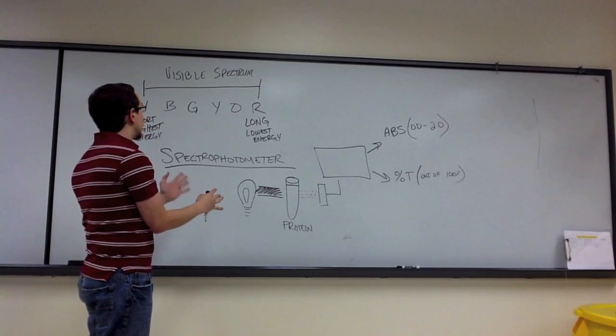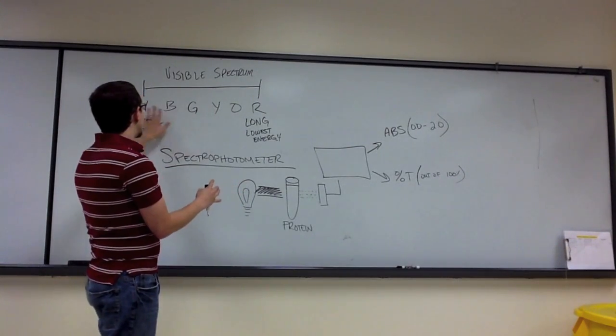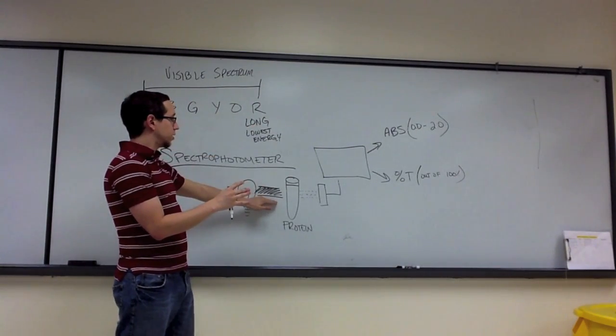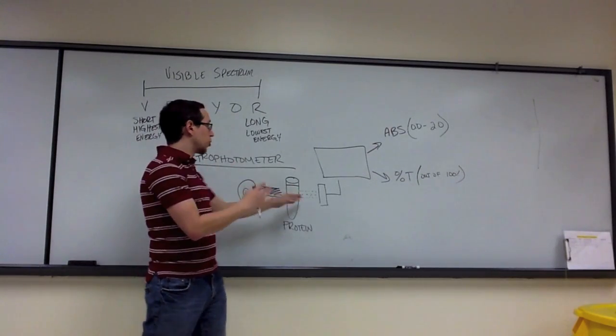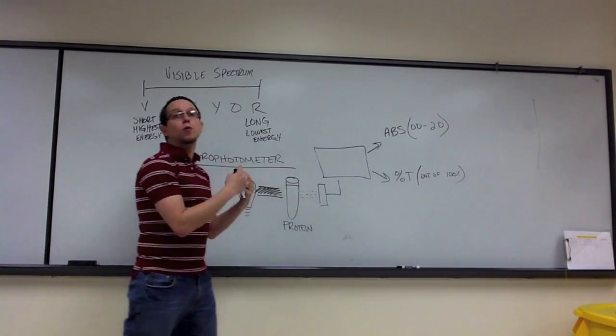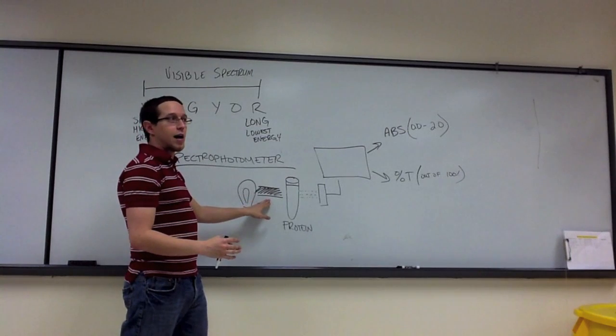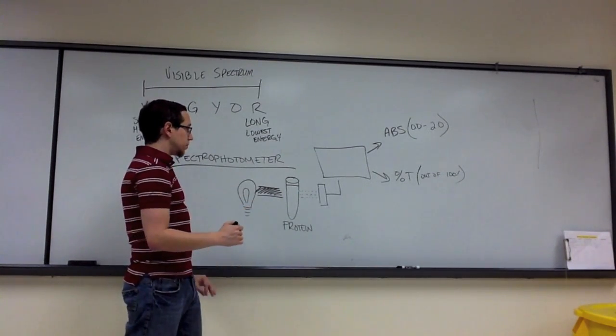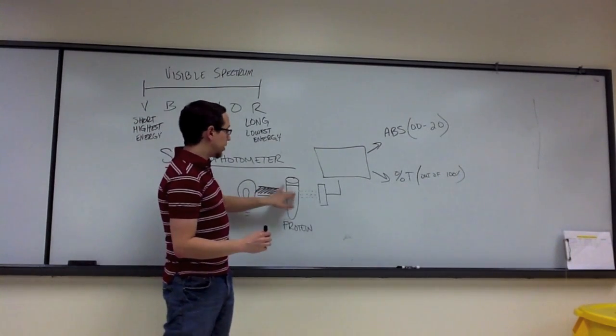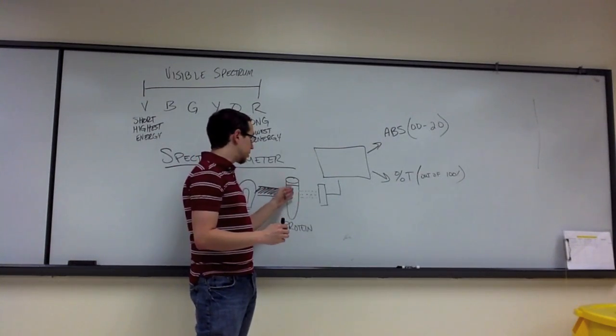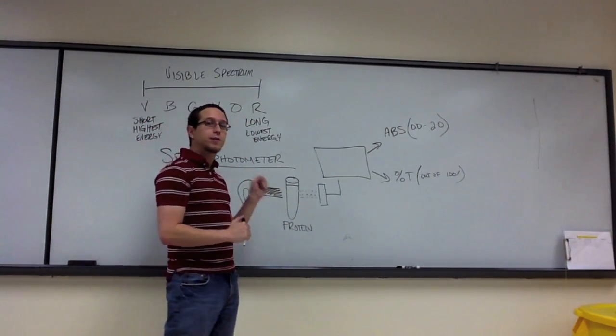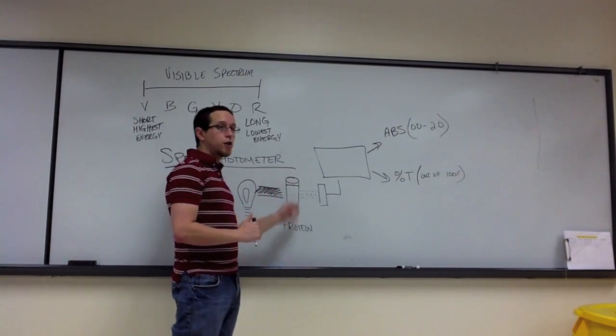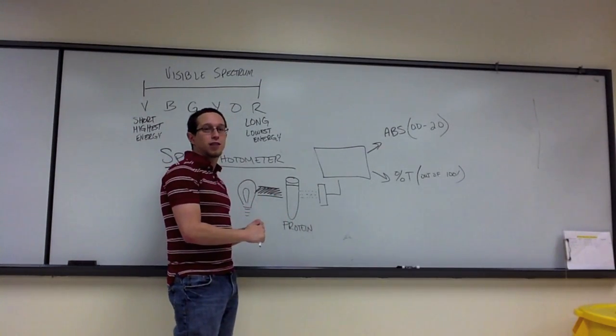So that's the general concept of what we're doing in this lab. We're using the visible spectrum of light to tell us the ability of a solution to absorb that particular wavelength that we chose in this lab of light. Once we determine how much of that light is absorbed, we're going to use that information to help us figure out the relative concentration of an unknown concentration of protein solution.